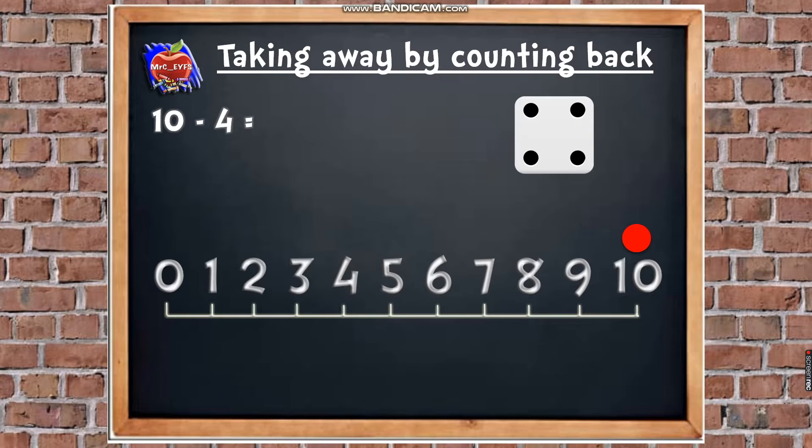So just like we did on the board game, we need to count back 4 times now. So we're going to do 4 jumps back. But don't forget, jump first. Are you ready? So we're going to go 1, 2, 3, 4. And what have we landed on? 6. Excellent. So 10, take away 4, equals 6. Well done.